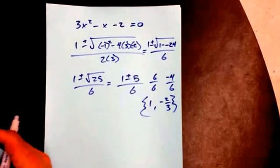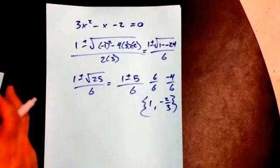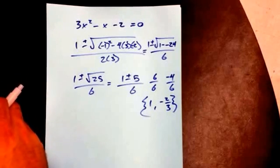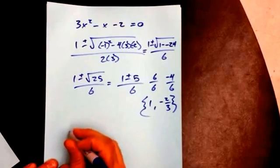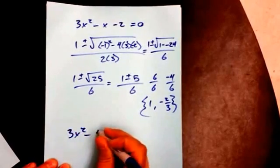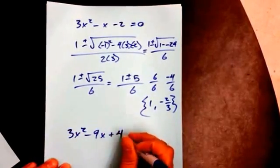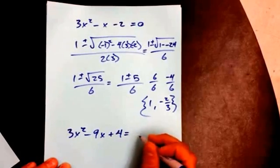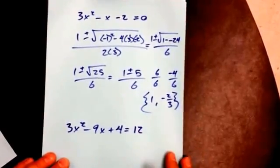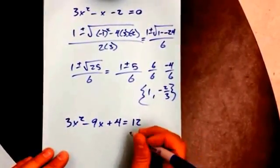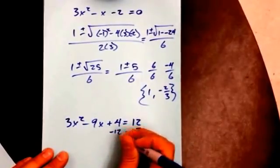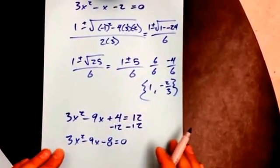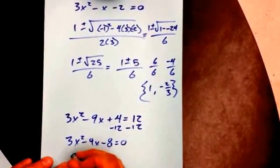A little bit more difficult one. Let me think. A little bit more difficult one would be something like this. So right now it's not equal to 0. So I need to set it equal to 0. First thing I'm going to do is subtract 12. Now it's in the right form. Now I just plug it in. Negative negative 9 is 9.